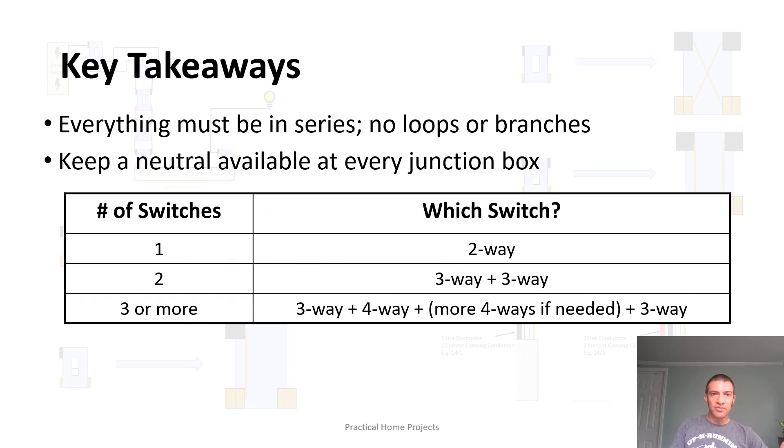And that's sort of the basics of what we have today, so let me go through the key takeaways. Everything must be in series. You have to have power source at the beginning and your device at the end. You can't add any loops, you can't add any branches. The best practice and what you have to do to follow the code going forward is to keep an actual neutral available in every single junction box. And then here I just have a table: if you only need one switch you can use a two-way. If you need two switches, you'll use a three-way for both of those. If you have three or more switches, you'll use a three-way on the ends and then as many four-ways as you need in the middle. So I really hope this helped you guys with setting up your new project.